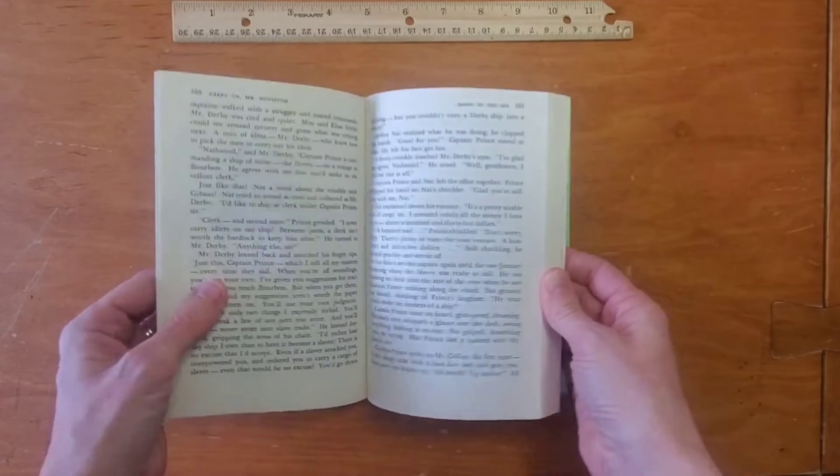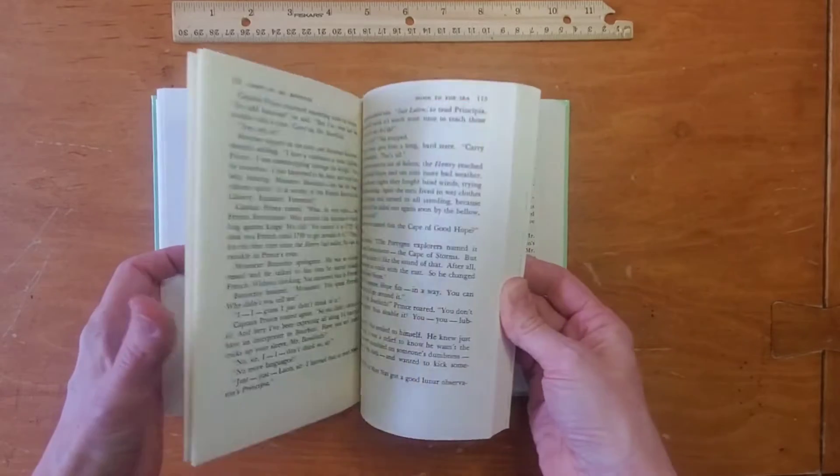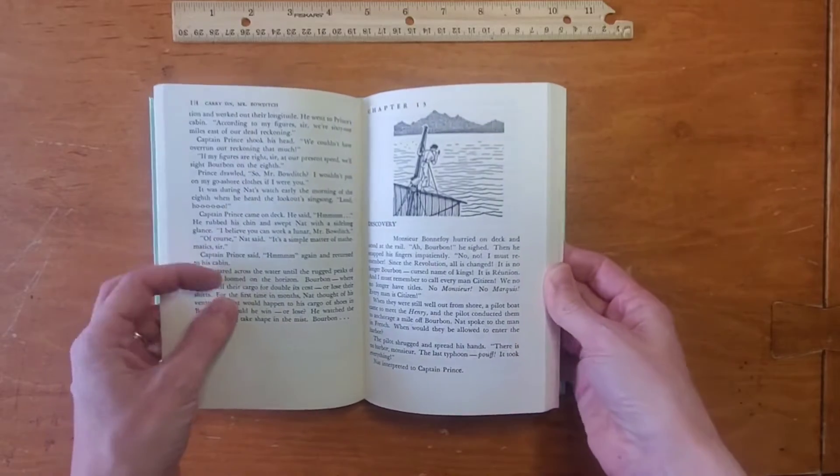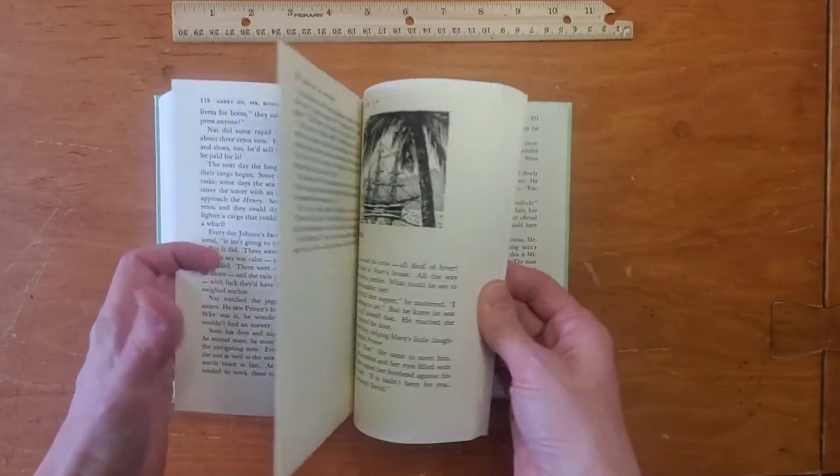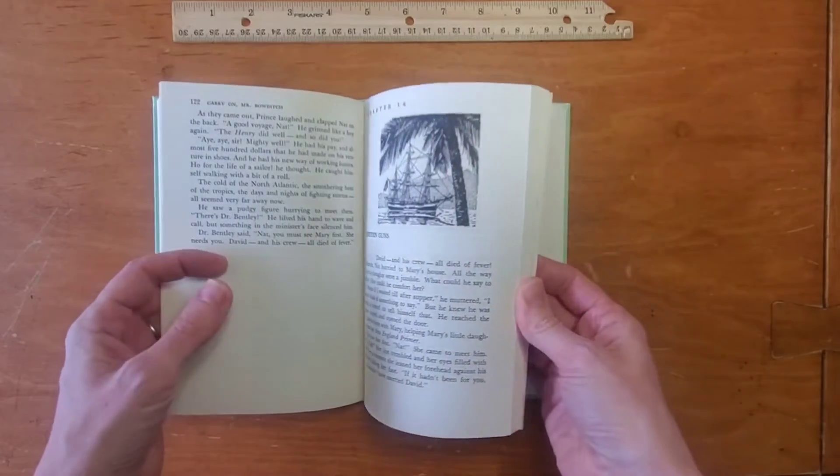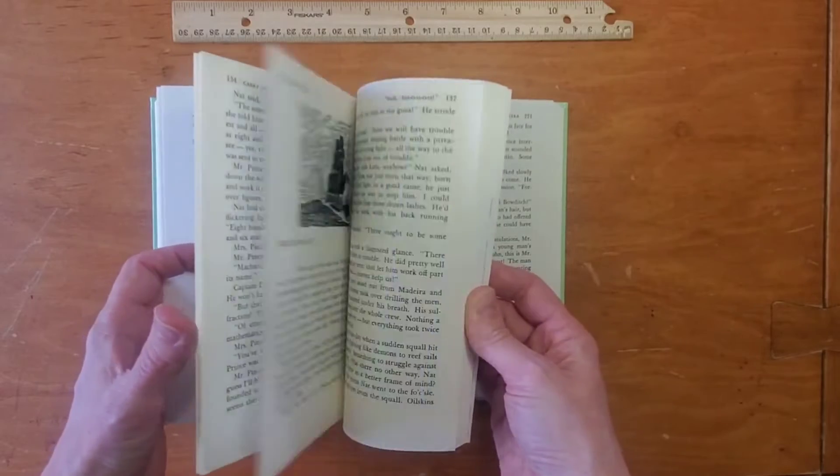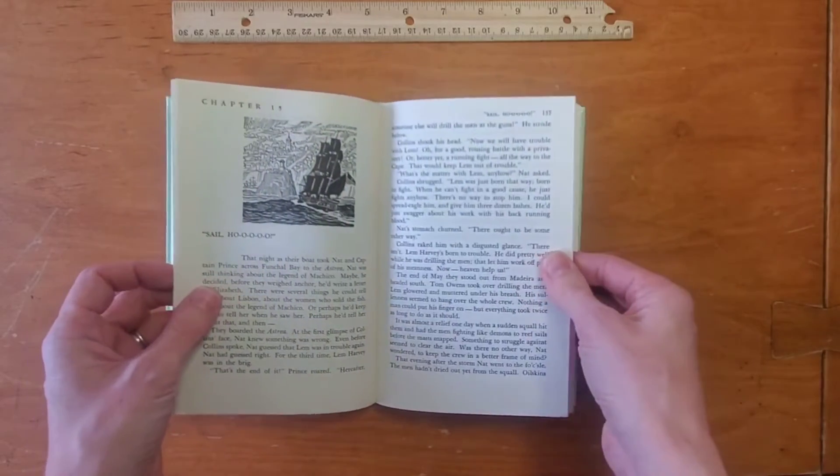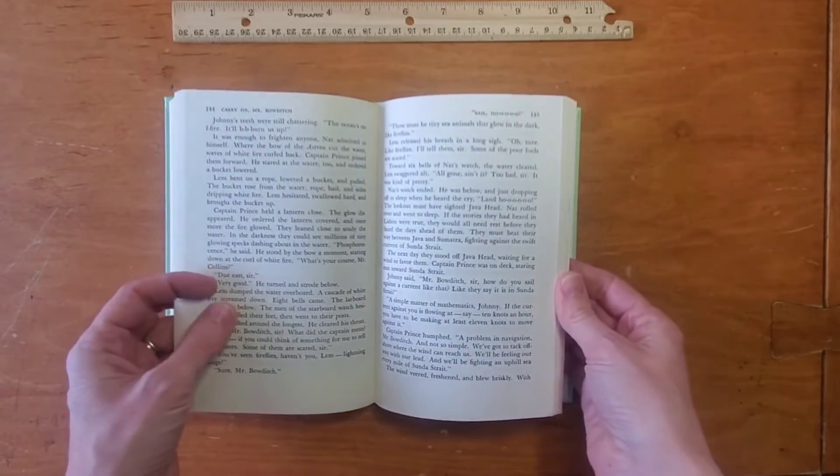He came up with a new way to take a lunar, which is using the moon to help navigate. And he ended up writing a book with a new way to navigate and a simpler way so that even sailors who were not trained would be able to figure out how to navigate. And he taught the sailors on the ships.